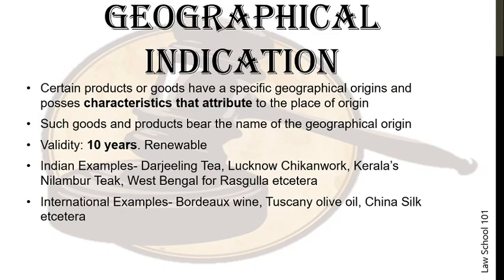Moving on to GI: it is important that the specific attribute or characteristic of the product comes from the geographical location only — it may be from the soil, the climate, the culture, or any such feature of that area. Exclusivity has to be maintained; a sense of speciality particular to and from a region has to come through.